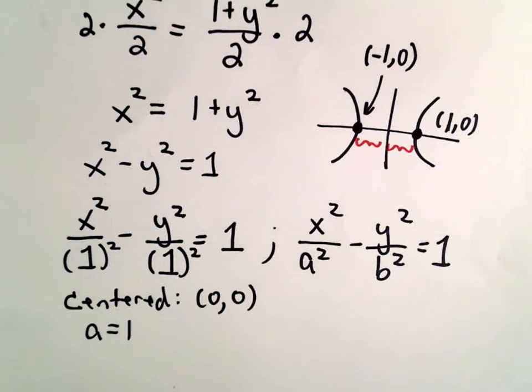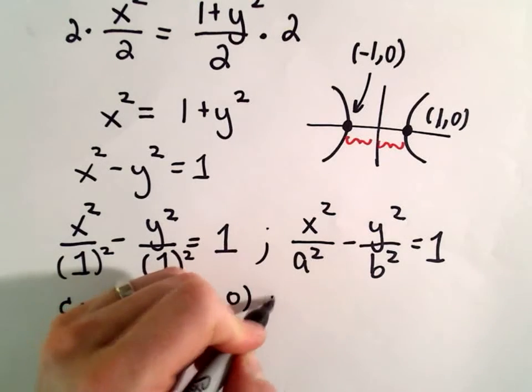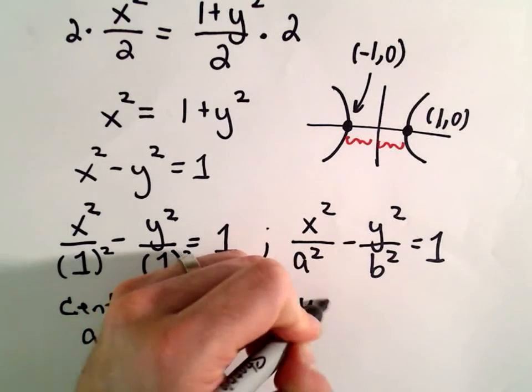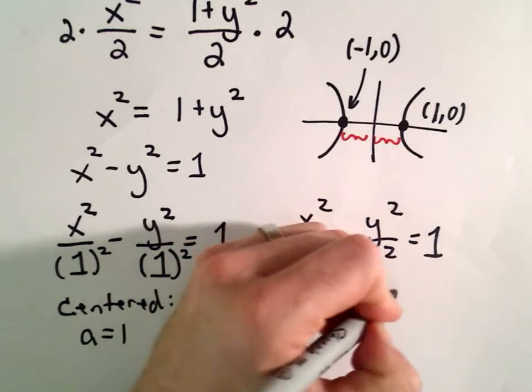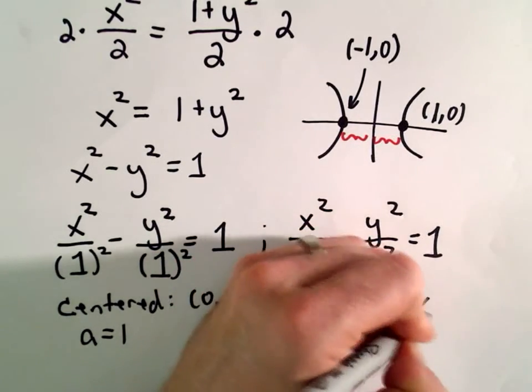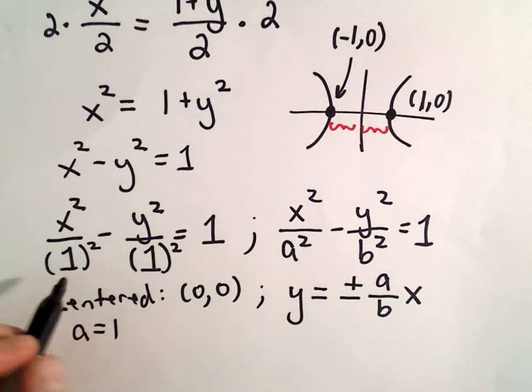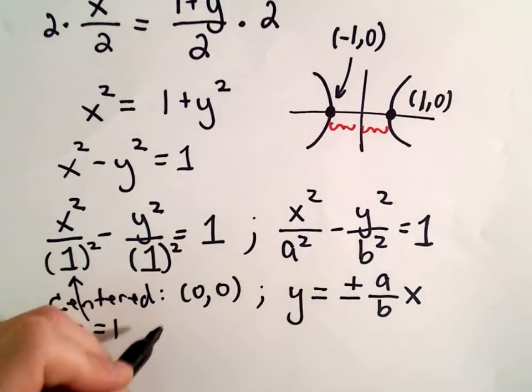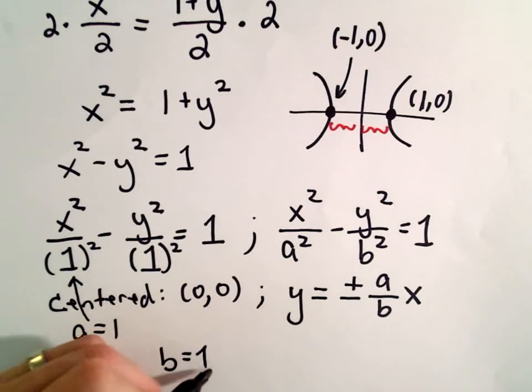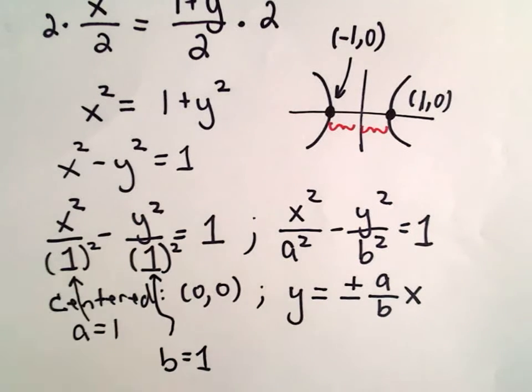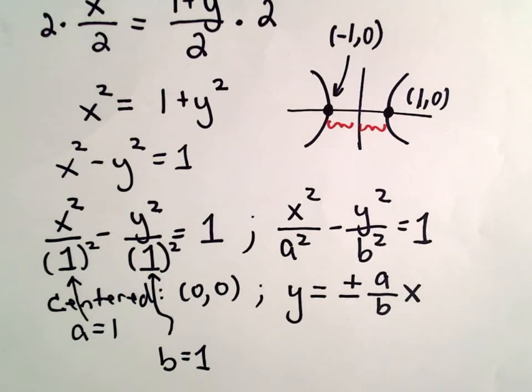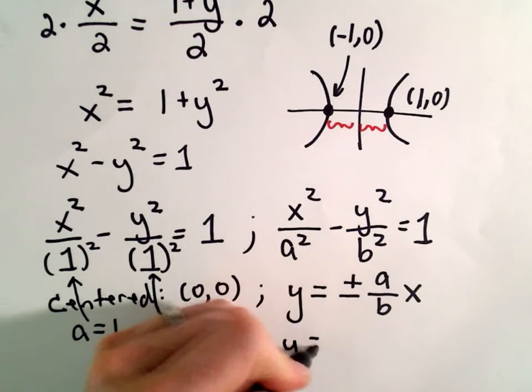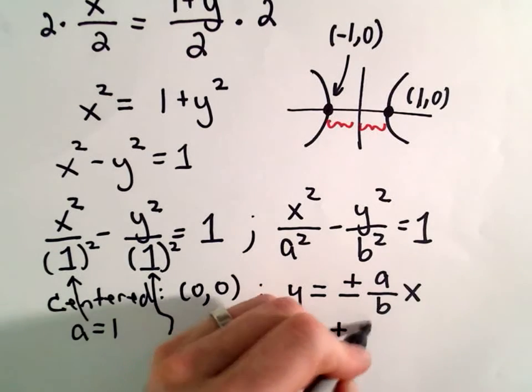And I guess the last little bit that we could use here to help sketch our graph. We know that the asymptotes are going to be of the form y equals positive-negative a over b times x. Well, again, a is equal to 1. It's the number that's being squared underneath x. And b is also going to be equal to 1, the number that's being squared underneath the y squared term.